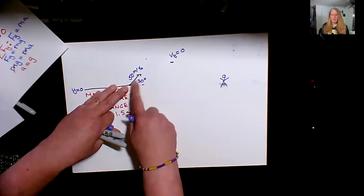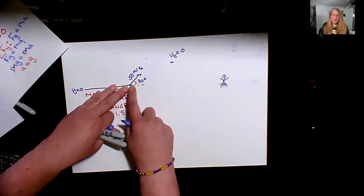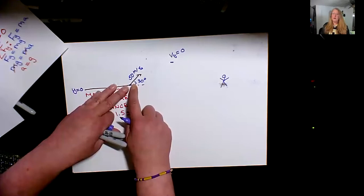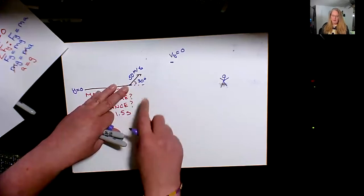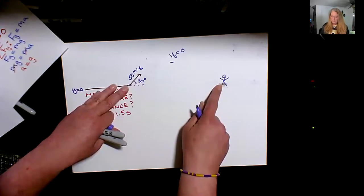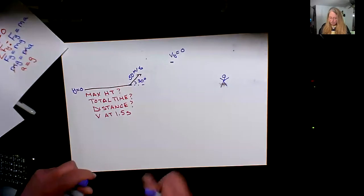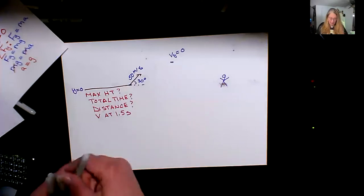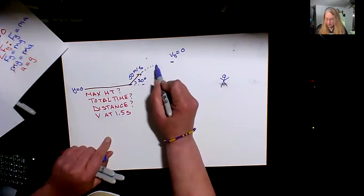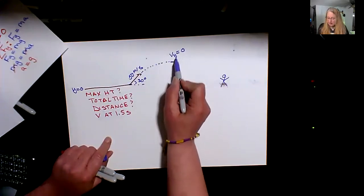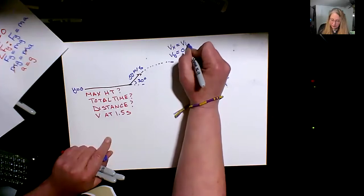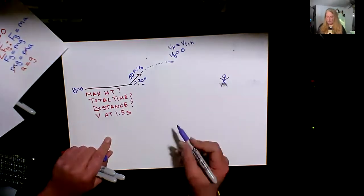Same with baseball — as soon as it leaves the pitcher's hand, the pitcher no longer has any influence on the ball. The ball is no longer accelerating from the pitcher's motion. The only thing acting on it is air resistance or gravity. In this case we're in the dome, so there is no air resistance — just the acceleration due to gravity. It's going to land some distance away, and we want to know if it's going to hit. We also want to know the max height.